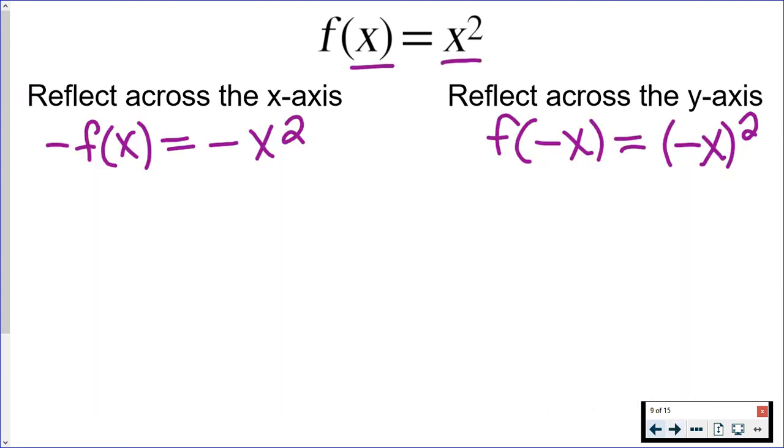That's because of the exponent - I'm talking about the reflection across the y-axis. The exponent has an effect on the negative sign. If you simplify this, negative squared means negative times negative. Well, negative times negative is positive, so this just simplifies back to itself.